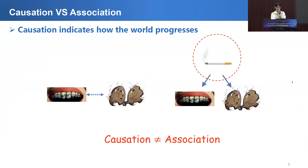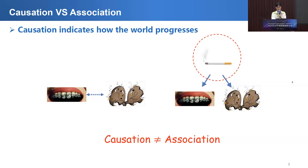I would like to discuss that causation is not equal to association, because causation indicates how the world progresses. Let us see this example. If you do some data mining from the data, we may find that yellow teeth is directly proportional with lung cancer. But as we know, whitening the teeth cannot cure cancer because there is a common cause — smoking — behind them. So if we consider the causation, we can know that smoking can cause yellow teeth and smoking can cause lung cancer.